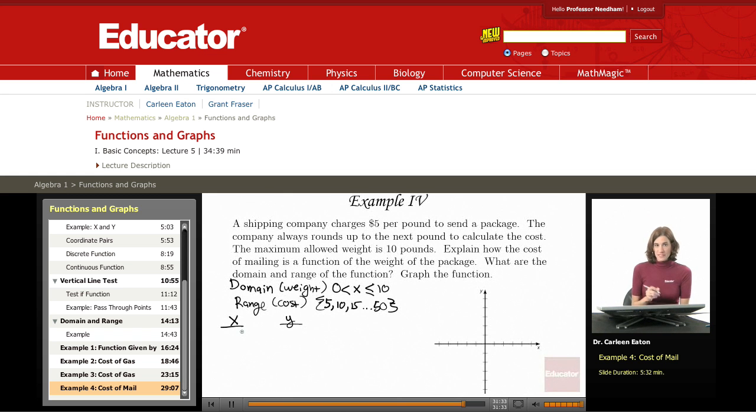Okay, something interesting happens because of this rounding up and because of there just being discrete numbers in the range. Let's say I have a very light package, it's only 0.1 pounds. How much are they going to charge me? $5.